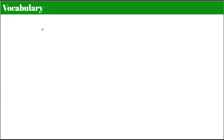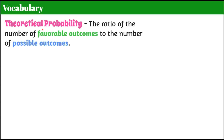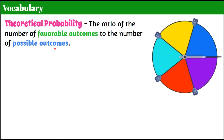Here are some vocabulary words. We're going to start with defining theoretical probability, which is the ratio of the number of favorable outcomes to the number of possible outcomes. This is also sometimes considered simple probability. I have a fair spinner here, meaning it's fair because it is divided into five equal sections, and each section is a different color.